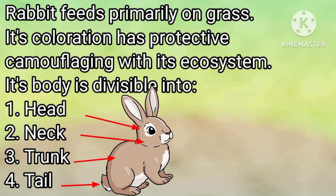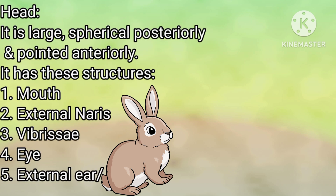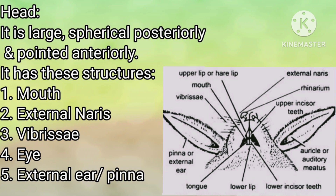Its body is divisible into head, neck, trunk and tail. The head is large, spherical posteriorly and pointed anteriorly. It has these structures: mouth, external nares, vibrissae, eyes and external ear or pinna.